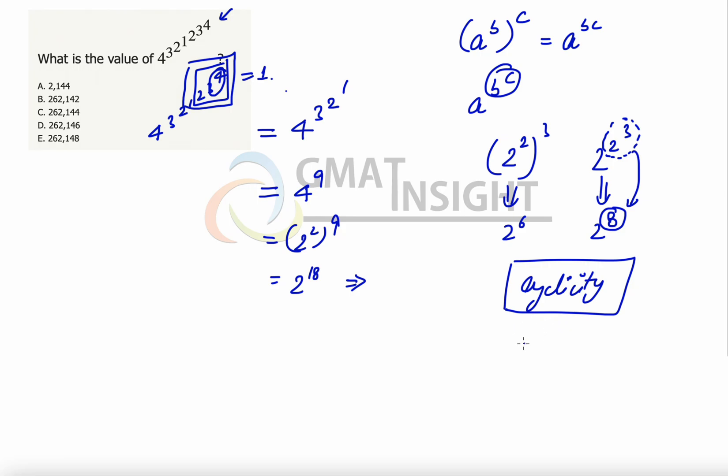For example, the cyclicity of 2 is 4, which means the units digit of the power of 2 keeps on repeating after every fourth power. So 2 raised to the power 18 will have the same units digit as 2 raised to the power 4x plus 2, which means 2 raised to the power 2. That means the units digit here is going to be 4.